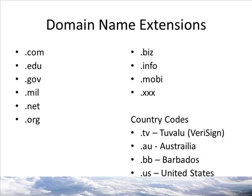There are a variety of extensions for domain names. The common ones you probably already know are .com, .edu, .gov, .mil, .net for internet companies, and .org for nonprofits.